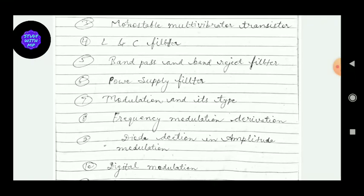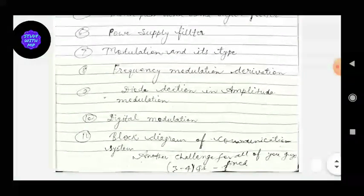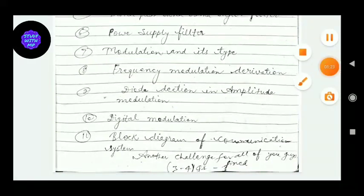is bandpass and band reject filter. Sixth question is power supply filter. Seventh question is modulation and its type, it's also very important. There is a high chance. Eighth question is frequency modulation derivation. Ninth question is diode detection and amplitude. Tenth question: